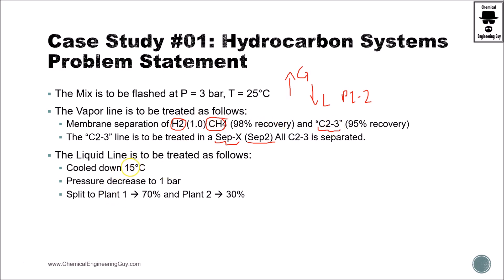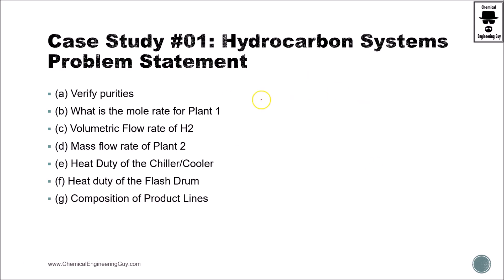The liquid line is to be treated as follows: we must cool down to 15°C, decrease the pressure, and then send to plant number one and plant number two. What we need to do is verify purities at the end of each stream, find the molar flow rate of plant number one, the volumetric flow rate of hydrogen gas — since it's common to report volumetric flow rate for gases — the mass flow of plant two, heat duty of the cooler or chiller, heat duty of the flash drum, and the composition of final product lines.